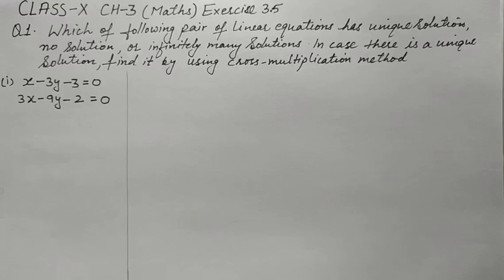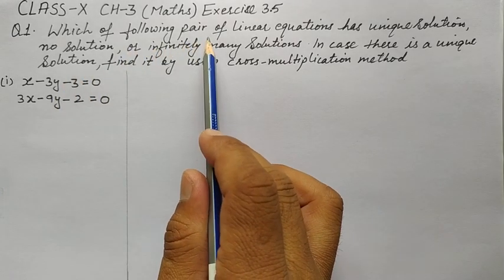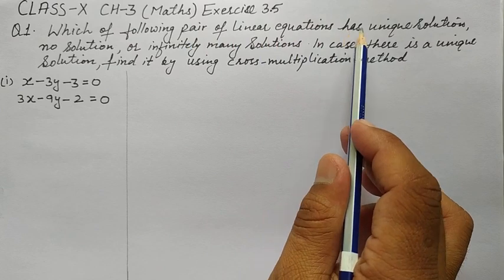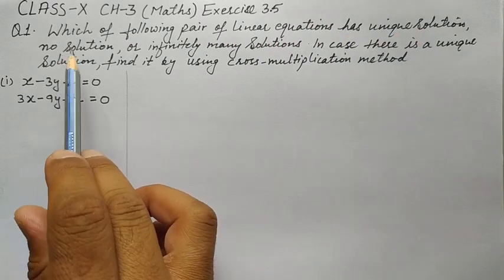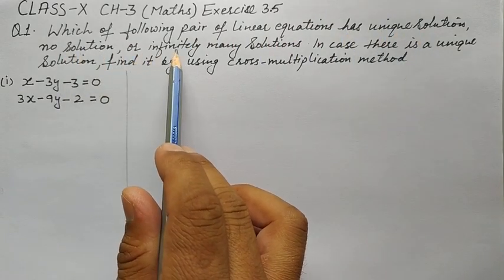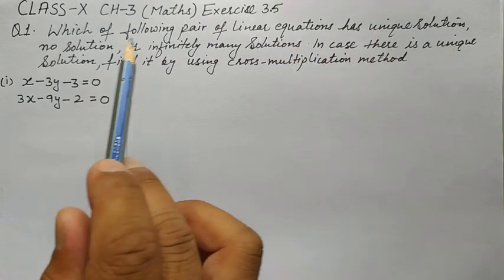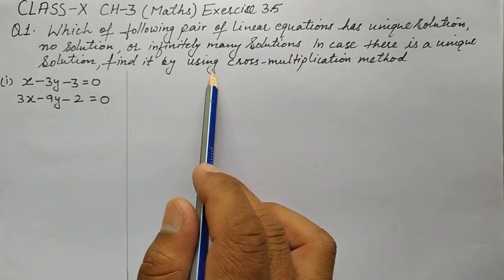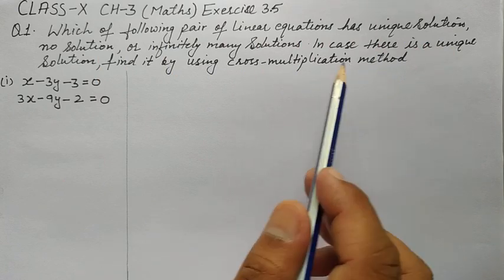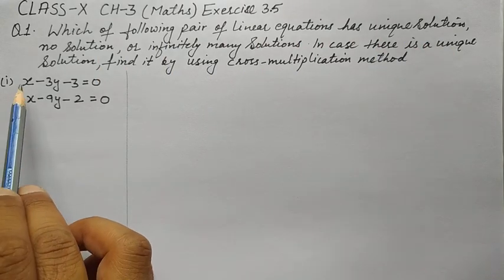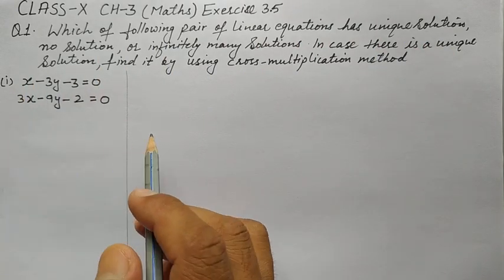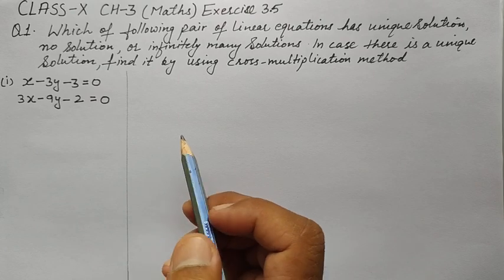Hello dear students, welcome to this maths class. Let's solve this question: which of the following pairs of linear equations has unique solution, no solution, or infinitely many solutions? In case there is a unique solution, find it by using the cross multiplication method. The first part is given, so first of all we should know what the general form of a pair of linear equations in two variables is.